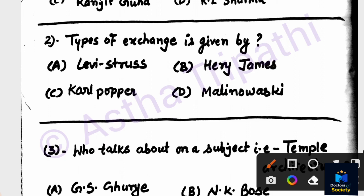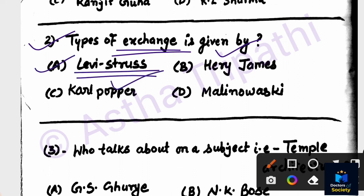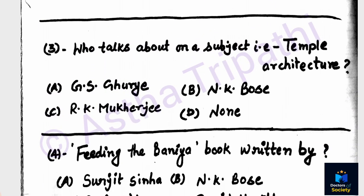Question number two: Types of exchange — given by whom? Options are Levi-Strauss, Harry James, Karl Popper, Malinowski. The answer is Levi-Strauss. Levi-Strauss talked about types of exchange, and he continues to be relevant on this topic.